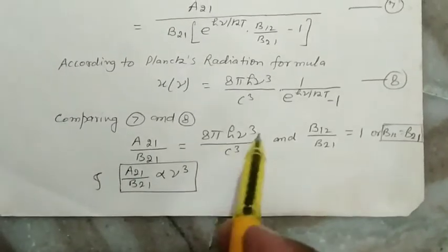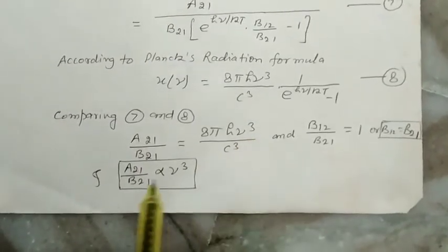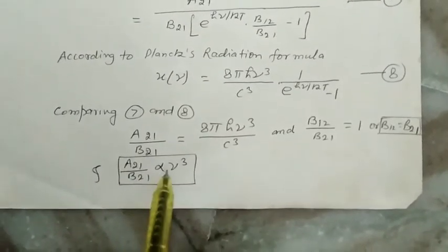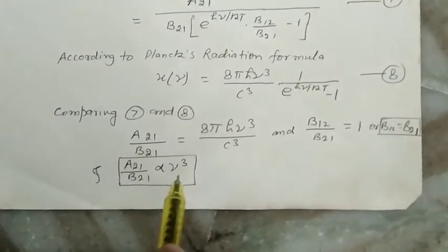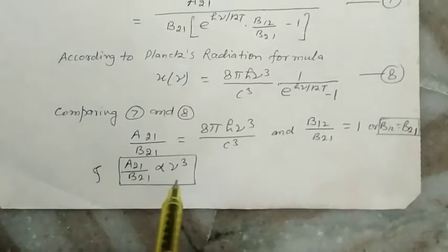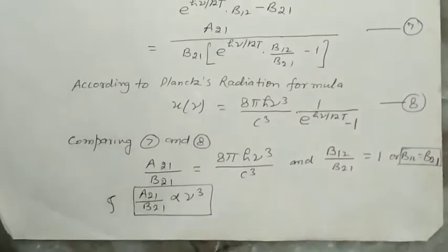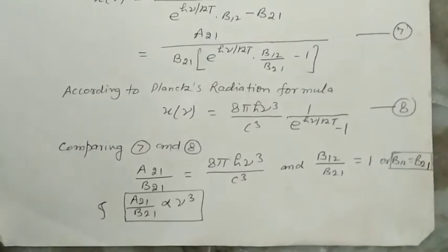From this equation, we conclude that A21/B21 is directly proportional to the cube of the frequency ν. This is all about the Einstein's coefficients. Thank you so much.